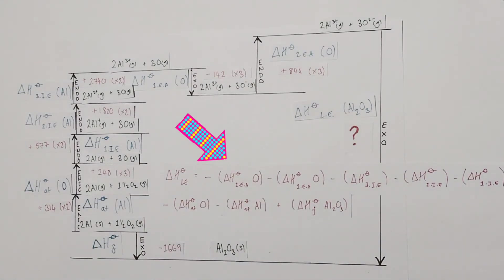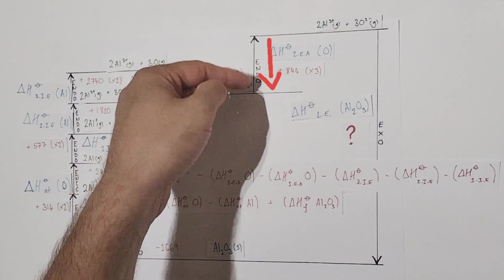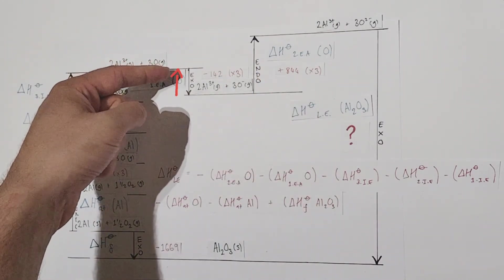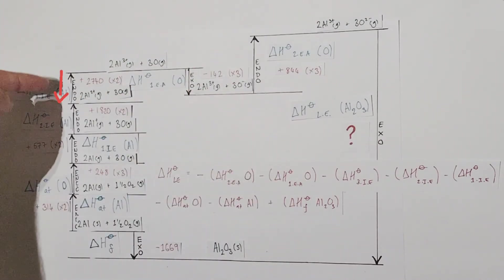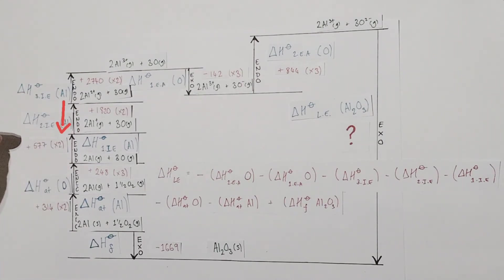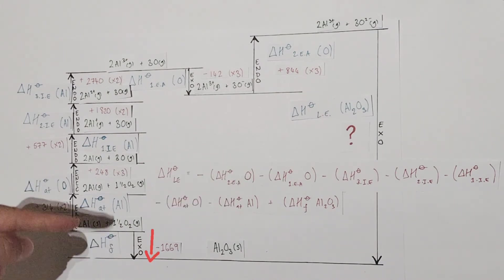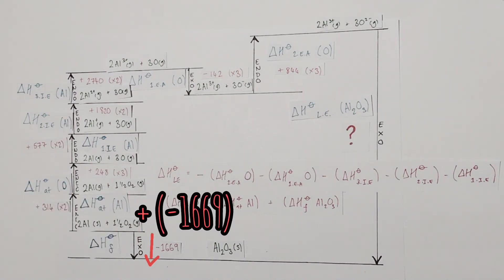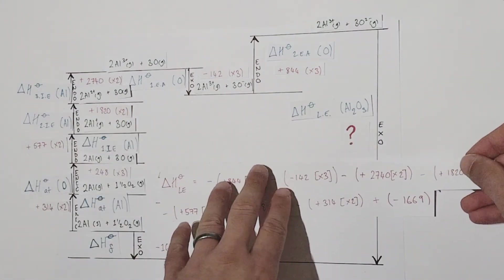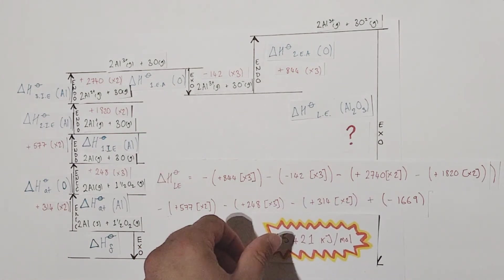Now let's add the numbers in. Following our cycle back: −(+844)×3, then −(−142)×3, then −(+2740)×2, then −(+1820)×2, then −(+577)×2, then −(+248)×3, then −(+314)×2, and finally +(−1669). Writing that down carefully and entering it into your calculator, the sum of all those enthalpy changes gives us a lattice enthalpy of −15,421 kJ/mol. That's a huge lattice enthalpy.